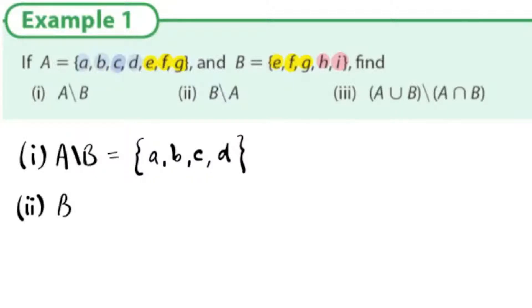What's B not A? This means the things that are in B that are not in A, that's h and i, the things in pink.